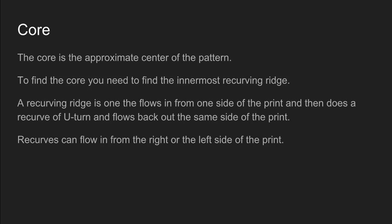When we were talking about fingerprint loops we said that there are three qualifications for a loop: a loop must have a sufficient recurve, it must have a delta, and it must have at least a ridge count of one. So it's important that we correctly identify the core because we're going to line up the core and the delta to figure out fingerprint ridge count. In a fingerprint the core is the approximate center of the pattern area, and to find the core especially in a loop you have to find the innermost recurving ridge or the innermost sufficient recurve.